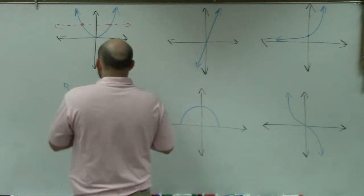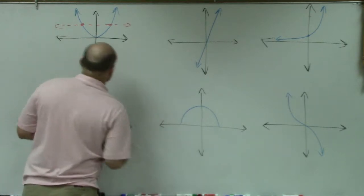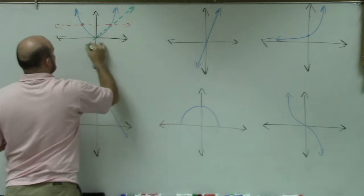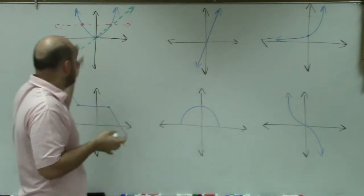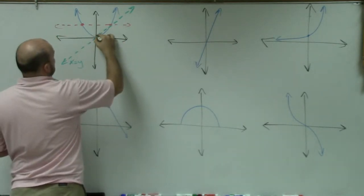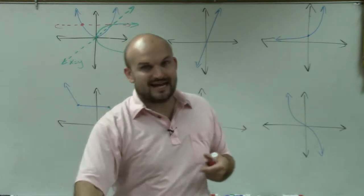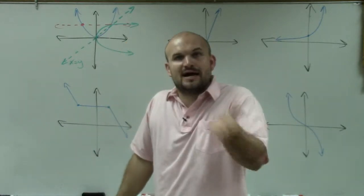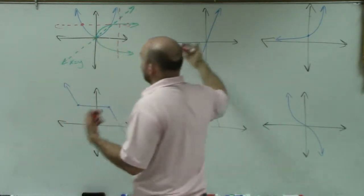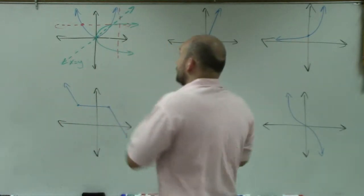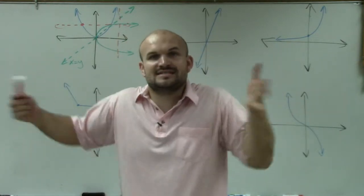The reason this works is because inverses are reflective about the y equals x line. So if I reflect this graph about the y equals x line, it would look something like this. And what you can see is that the inverse function is definitely not a function, because it does not pass the vertical line test. So even though the quadratic is a function, it does not have an inverse.